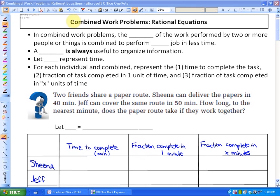In this lesson, we're going to look at some word problems having to do with rational equations. We're going to look at combining the work of two or more people or objects in order to shorten the work that would take only one person to do a job. It's called combined work problems with rational equations.